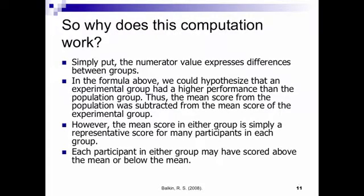So why does this computation work? Well, simply put, the numerator always expresses differences between groups. In the formula I just showed you, we could hypothesize that an experimental group had a higher performance than a population group. And so the mean score from the population group could be subtracted from the mean score of an experimental group. But keep in mind that the mean score in either group is simply a representative score. And each participant in either group may have scored above the mean or below the mean.